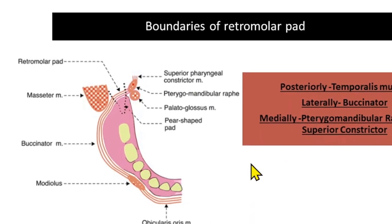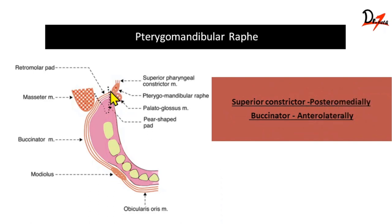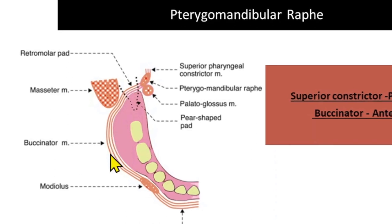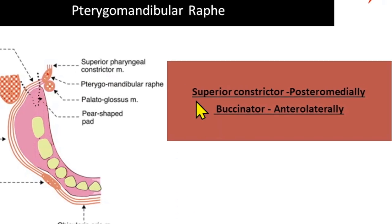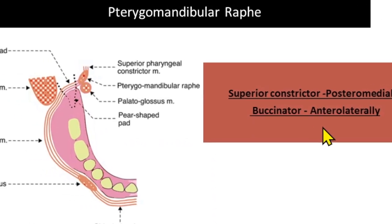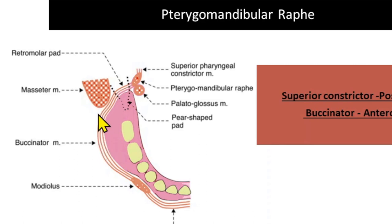Let's see what is the pterygomandibular raphe. As you can see in this picture, the pterygomandibular raphe is formed by the insertion of two muscles: the buccinator muscle anterolaterally, and the superior constrictor muscle posteromedially.